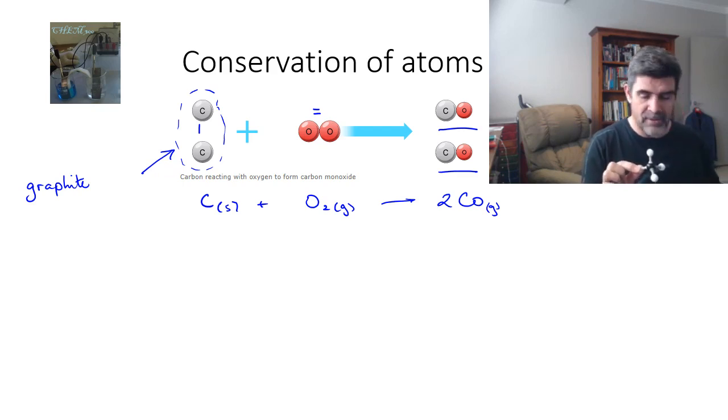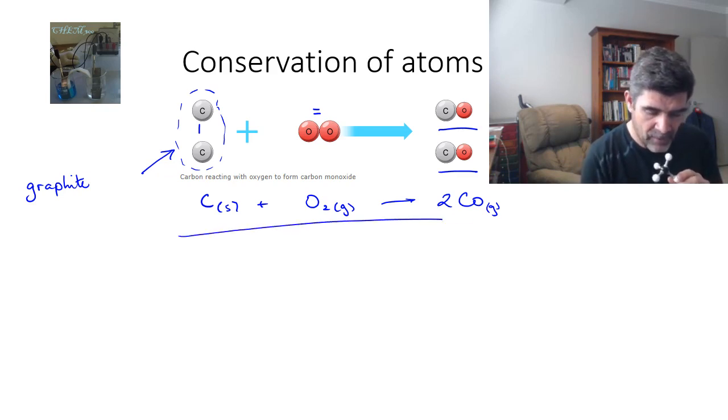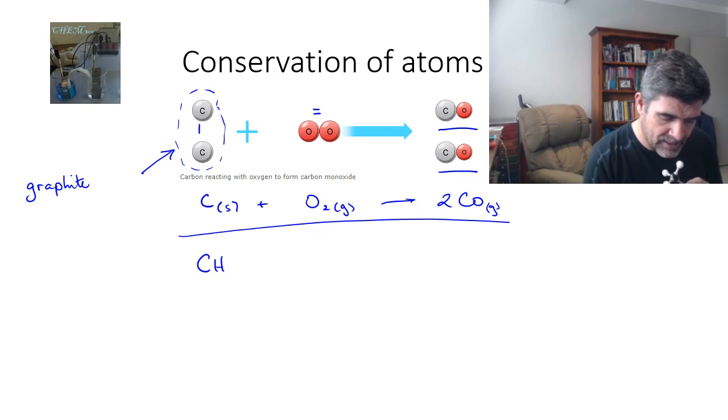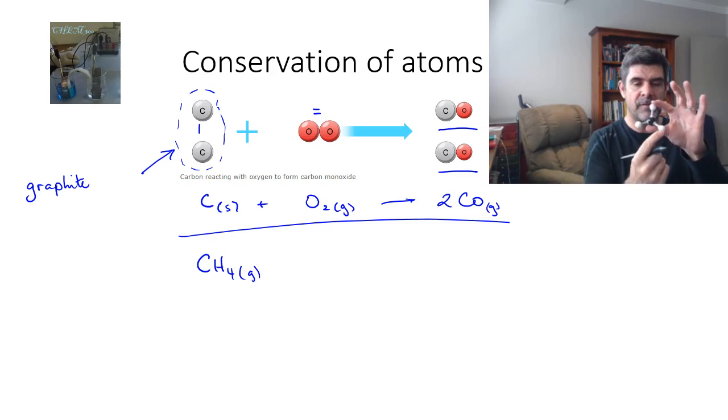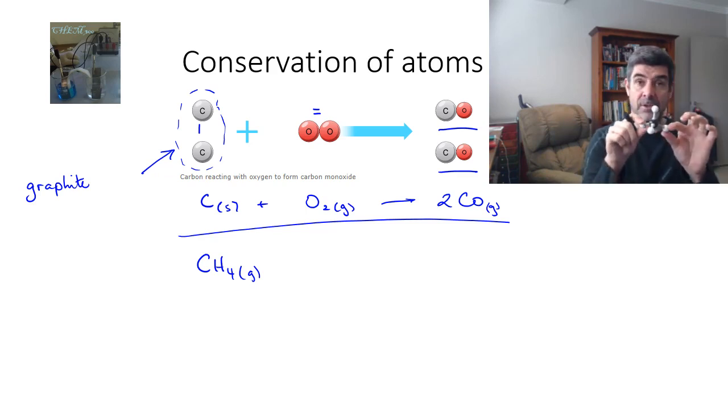Now the most important thing to remember and this second example that I'm going to look at involves the combustion of methane CH4, which is this particular molecule here, a tetrahedral molecule with a central carbon atom bonded to four hydrogen atoms in a tetrahedral structure.